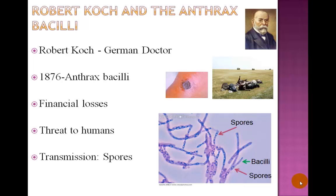Robert Koch was the person who greatly contributed towards an understanding of the germ theory proposed by Pasteur. Koch was a German doctor who was familiar with anthrax, a deadly disease that causes skin ulcers. Anthrax periodically ravaged cattle and sheep and could affect humans as well, and was responsible for huge financial losses to farmers in the 1800s.